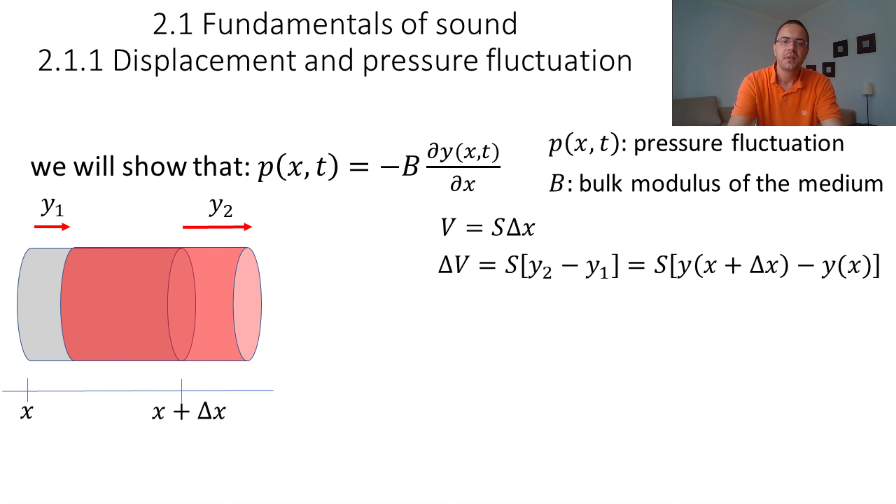After a small time, the particles have moved. The particles that were at position x moved by a quantity Y1, and the particles at position x plus delta x have moved by a quantity Y2. So we can calculate the change of volume, delta V, which will be the product of the section multiplied by the difference Y2 minus Y1. Obviously, if Y1 and Y2 are equal, the volume will not change, and delta V equals 0. But if Y1 and Y2 are different, then delta V will be positive or negative.